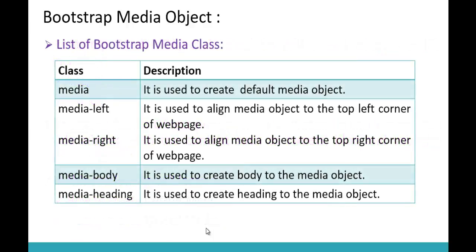To work with Bootstrap media classes, I need a set of classes. The class 'media' creates the default media object. 'media-left' and 'media-right' align the image or video to the left or right respectively. 'media-body' adds content to the media object, and inside the body, 'media-heading' adds a heading to the media object.